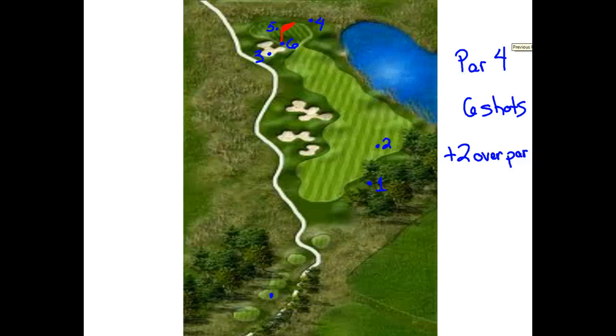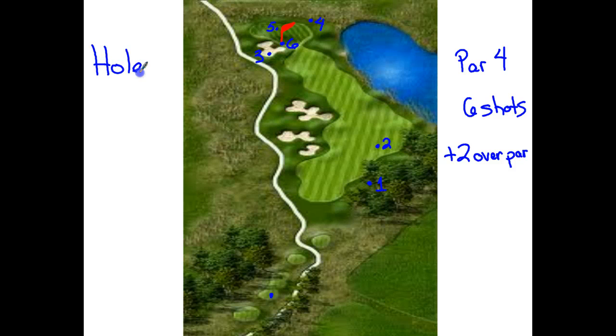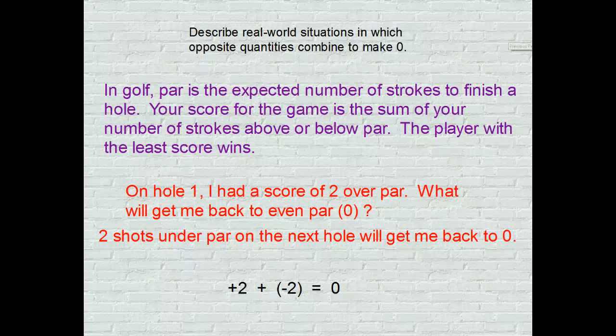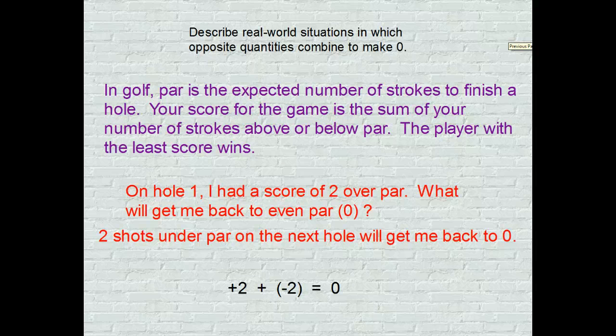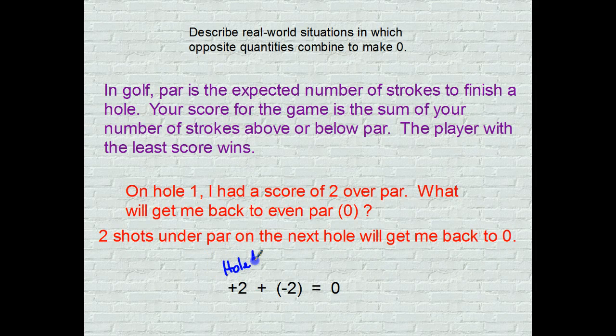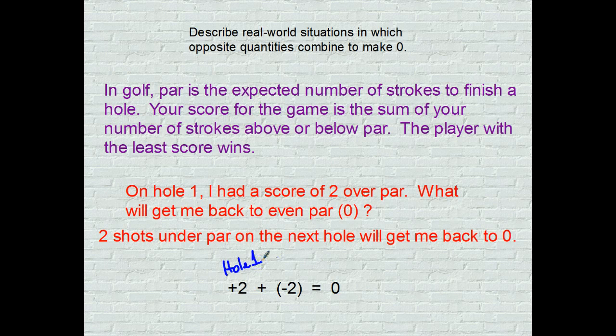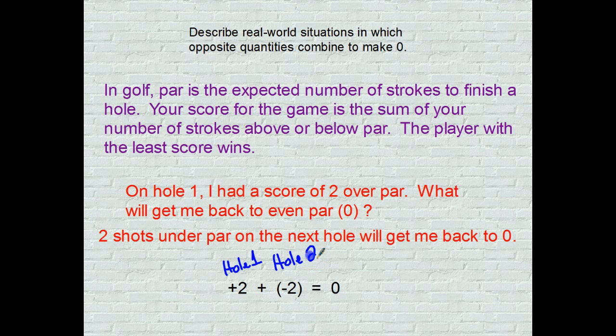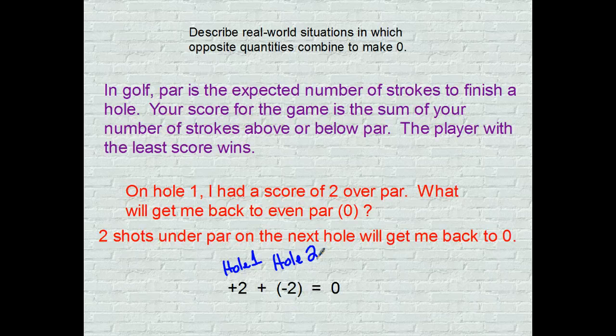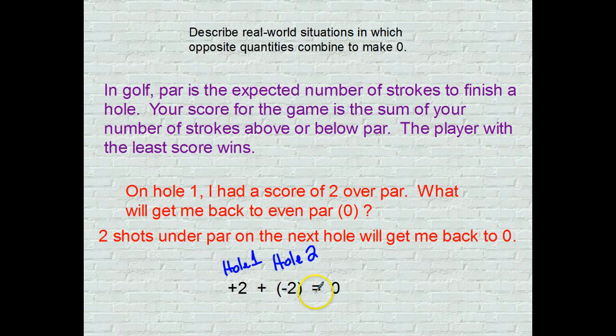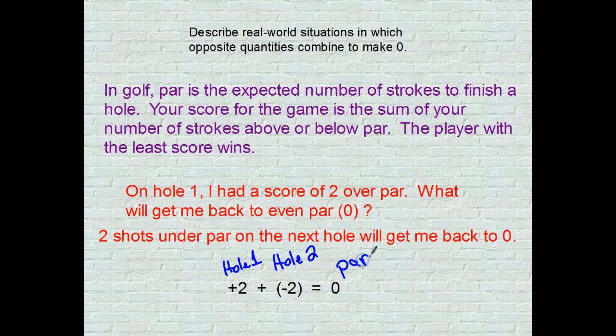So, what's going to get me back to zero? What's going to get me back to par on the second hole? If I go to hole number two now, what am I going to have to do miraculously to get from a two over zero back to zero? Down here on the bottom, I have that situation. On the first hole, on hole number one, I was two over. And on hole number two, whatever par is, I am going to have to do two less than that to get back to where I started. So, positive two added to negative two is equal to zero or par. I hope that's not too confusing for you.